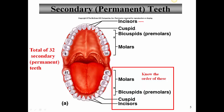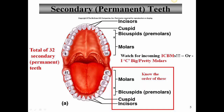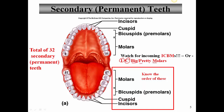So we have incisors in front, cuspids or canines next, bicuspids or premolars after that, and molars after that. A good mnemonic to remember these: if you know what an intercontinental ballistic missile is — ICBM — that stands for incisors, cuspids, bicuspids, molars. Another way is the phrase 'I C big pretty molars' — incisors, cuspids or canines, bicuspids or premolars, and finally molars.